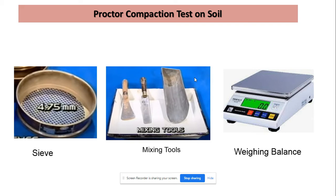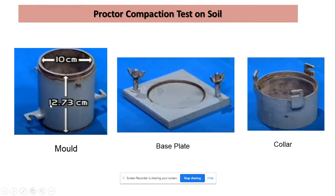First we will use the 4.75 mm sieve, and then using these tools we will mix the water into the soil. These tools will also help us in taking out the soil sample from the mold. Finally, we will require a weighing balance to weigh the soil sample. Before we start testing, we will weigh the empty mold, which is used in the Proctor compaction test. It has an internal diameter of around 10 cm and a height of 12.73 cm. The empty mold is weighed and its weight is recorded as W1.